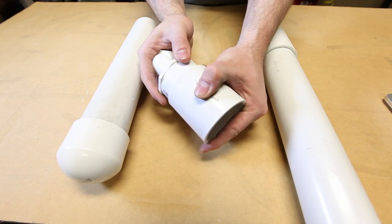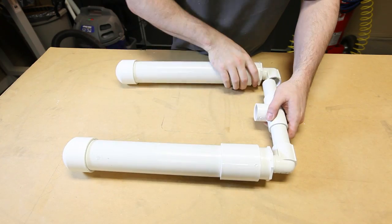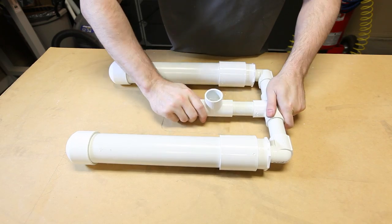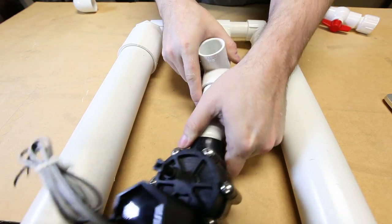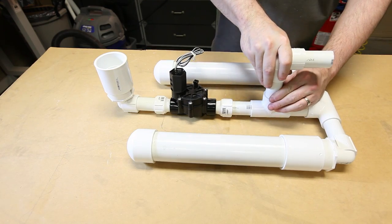After we get the PVC pipe cut, it's time to test fit all of our components. Let's start by assembling the pressure tanks. The pressure tanks are connected by a 1-inch PVC T. Another T is added to split incoming air from outgoing air, and will be connected to our firing mechanism, which is a simple water sprinkler valve.